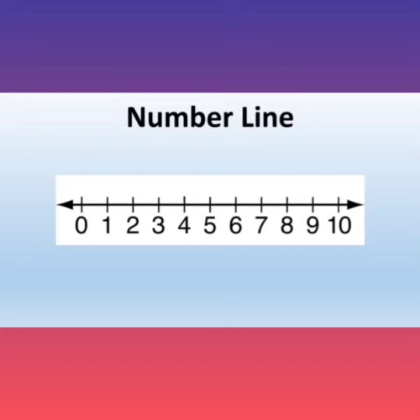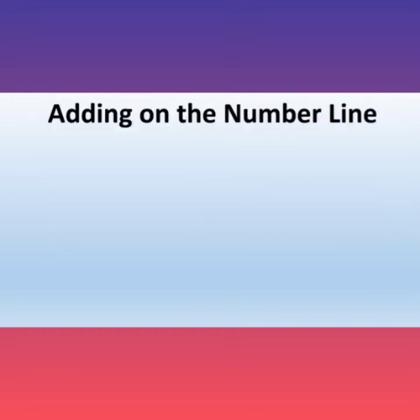This is a number line. A number line is a straight line with arrows on both the ends and marks in between on the lines with numbers 0 to 10 on each mark. We will use this number line to do addition today. So children, let us look at some questions to understand how to do addition on the number line. So let's begin.